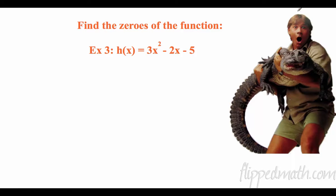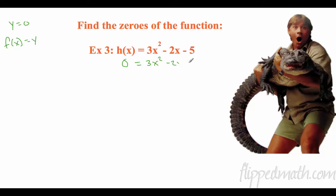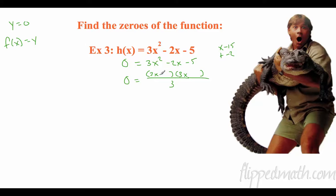The next famous Australian is Steve Irwin the Crocodile Hunter. Don't know if you guys ever watched him on Animal Planet, but that guy's awesome. So we want to find the zeros of a function. Remember, finding the zeros is when y equals zero, and function notation — f of x is the same as y. So I'm going to find the zero of this function. I need to factor: two numbers that multiply to negative 15 and add to negative 2. We're going to have 3x on top twice, and divide by the extra factor of 3. Two numbers that multiply to negative 15 and add to negative 2: negative 5 times 3 is negative 15, and negative 5 plus 3 is negative 2.